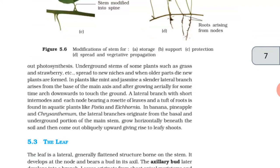In plants like mint and jasmine, a slender lateral branch arises from the base of the main axis, and after growing aerially for some time arches downward to touch the ground. A lateral branch with short internodes and each node bearing a rosette of leaves and a tuft of roots is found in aquatic plants like Pistia and Eichhornia.